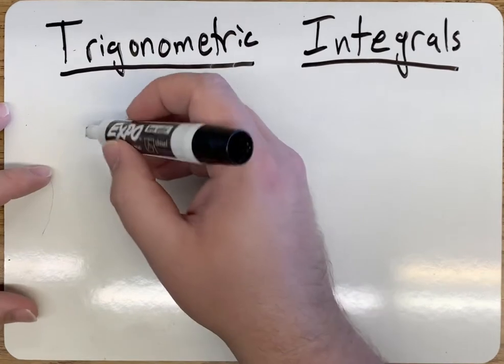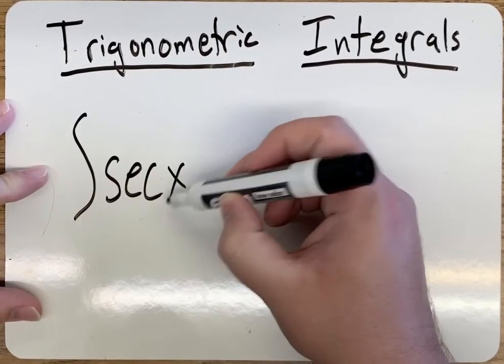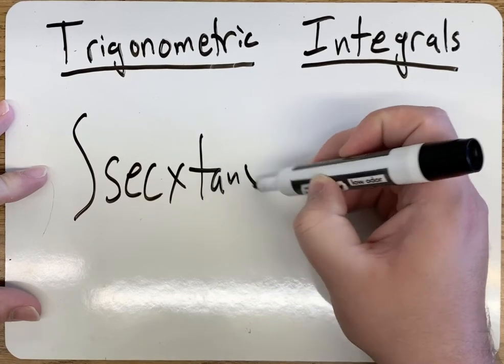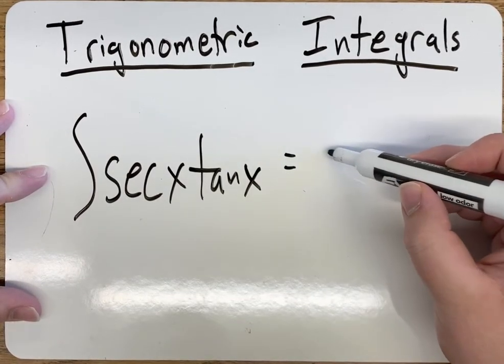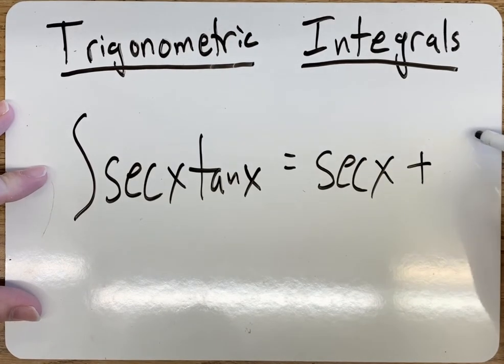All right, next one that we're going to talk about is secant x tan of x. And this antiderivative ends up being secant x plus c.